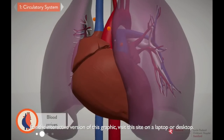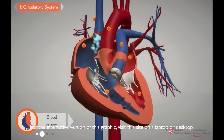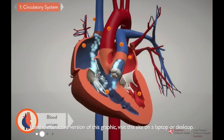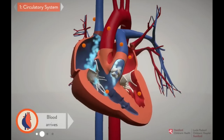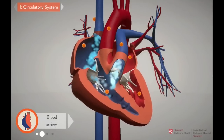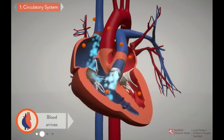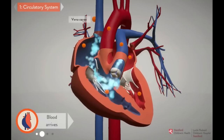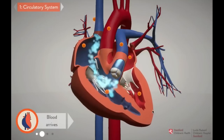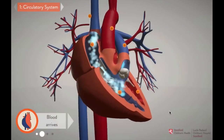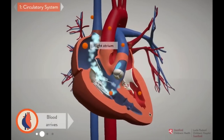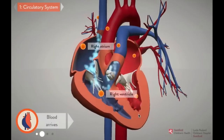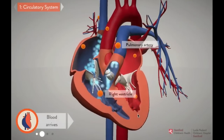The right side of the heart is on the left side of the screen, and vice versa, because the patient is facing you in this graphic. Blood that needs a fresh supply of oxygen arrives to the right side of the heart via the inferior vena cava and the superior vena cava, the body's largest veins. As the heart beats, that blood gets pumped through the right atrium and ventricle, and into the pulmonary artery, which leads to the lungs.